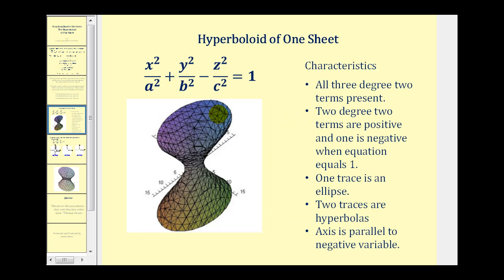Remember the terms present in the equation of a quadric surface tells us what type of quadric surface we have. For a hyperboloid, notice that all three degree two terms are present. But when the equation is equal to one, two of the terms are positive and one of the terms is negative.